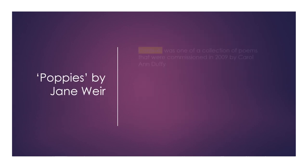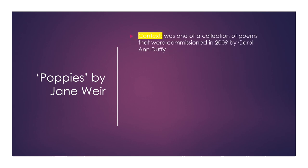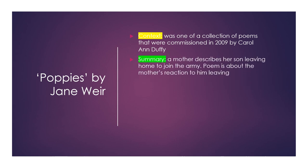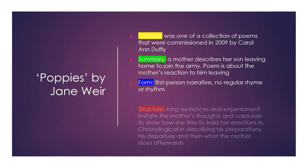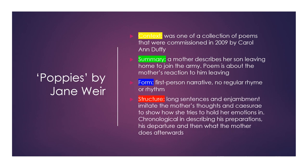Poppies by Jane Weir was one of a collection of poems commissioned in 2009 by Carol Ann Duffy. A mother describes her son leaving home to join the army, and the poem is about the mother's reaction to him leaving. It's a first person narrative with no regular rhyme or rhythm. Long sentences and enjambment imitate the mother's thoughts, and caesura shows how she tries to hold her emotions in. The structure is chronological, describing his preparations, his departure, and then what the mother does afterwards.